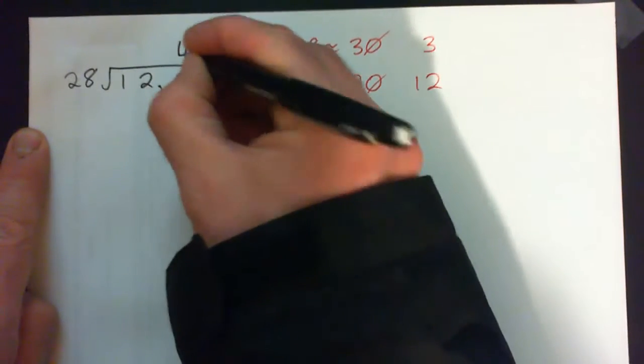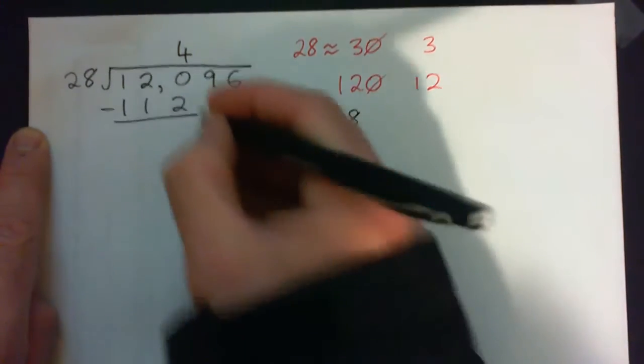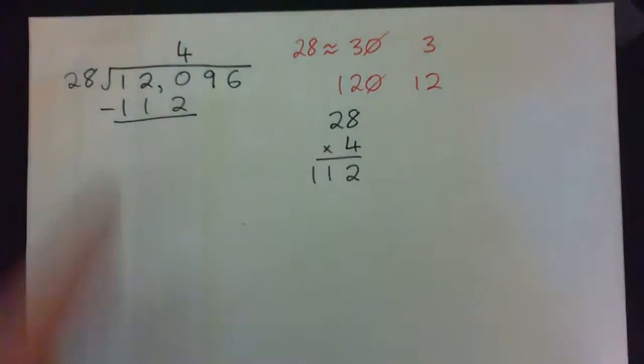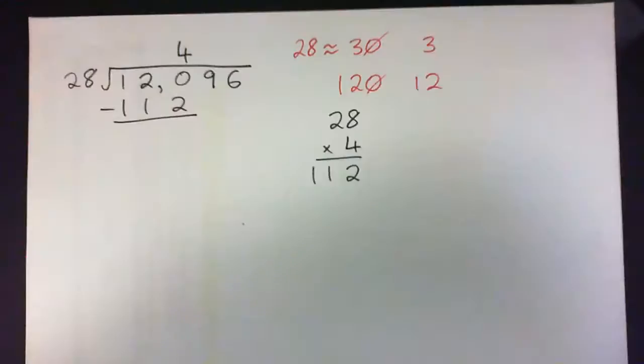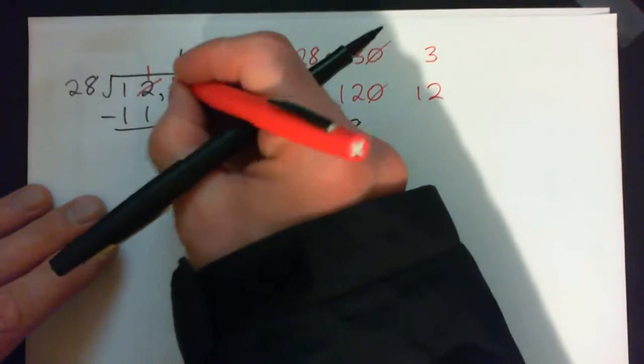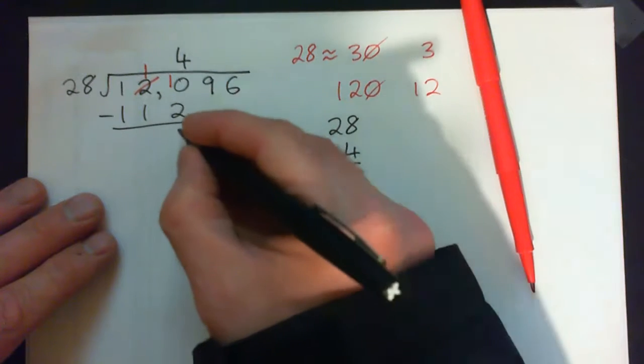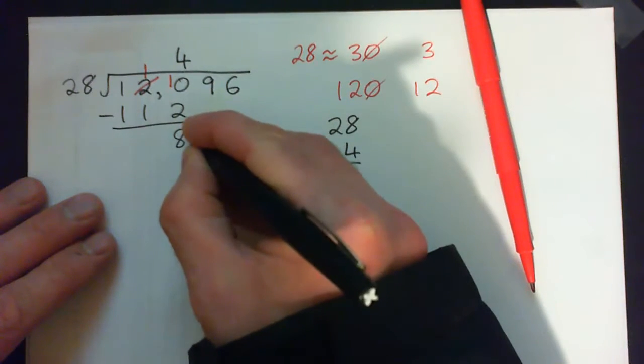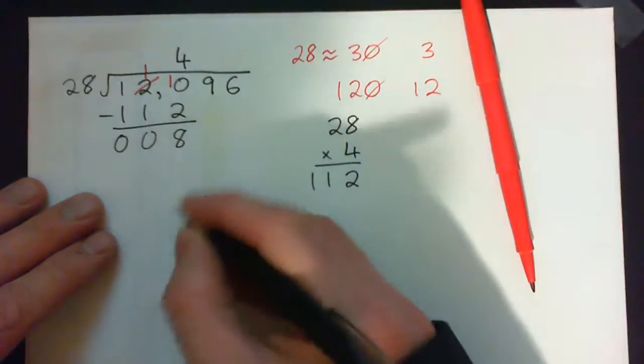So 4 worked. 4 times that, 112. Now we can subtract. 120 minus 112. 0 minus 2 won't work, got to borrow from here. That becomes a 1, bring the 10 over. So now we have 10 minus 2 is 8. And then 1 minus 1 is 0, 1 minus 1 is 0. So we have 8.